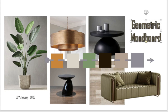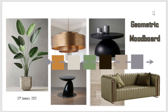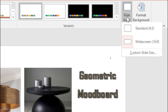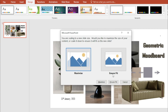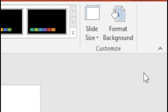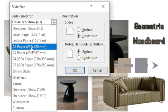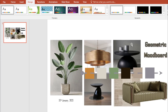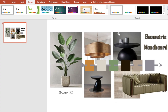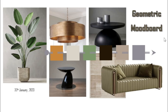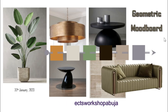This is our mood board — a simple, straight-to-the-point mood board on screen. You can also change the size of your paper by going to Slide Size. If you want to change it to A3 or A4 without worrying about your work being out of frame, just click Ensure Fit. I hope you enjoyed this tutorial — please leave a comment and tag us on Instagram at The Architects Workshop. The link is in the description below.